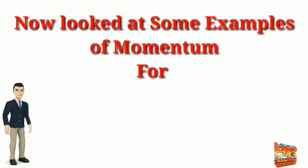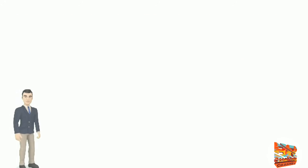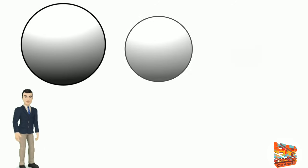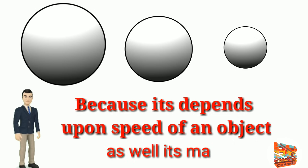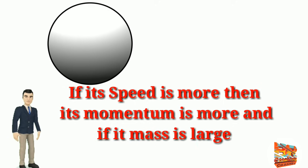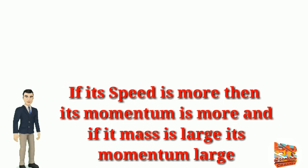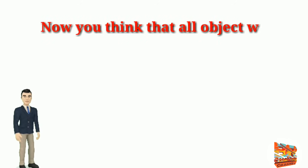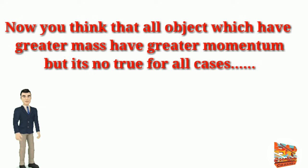Now look at some examples of momentum for better understanding. As you know, an object of any size can have a large momentum because it depends on the speed of the object as well as its mass. If its speed is more, then its momentum is more. If its mass is large, then its momentum is large. Now you think that all objects which have greater mass have greater momentum, but it's not true for all cases.